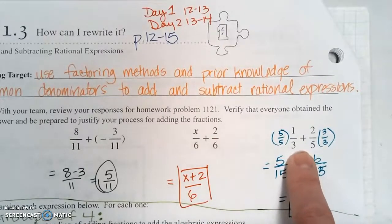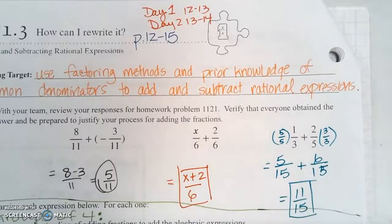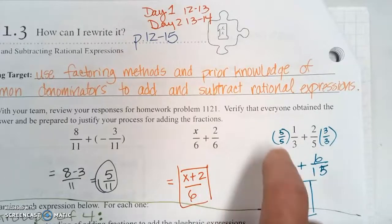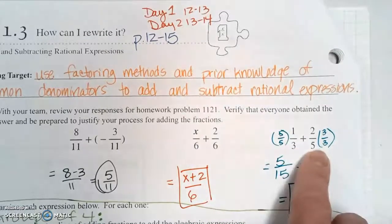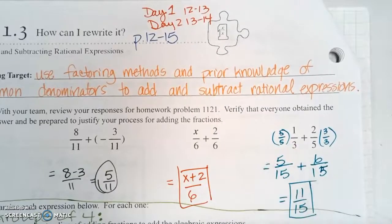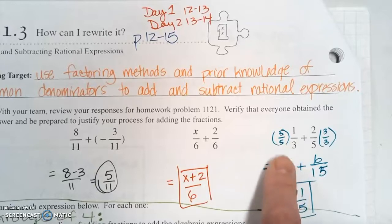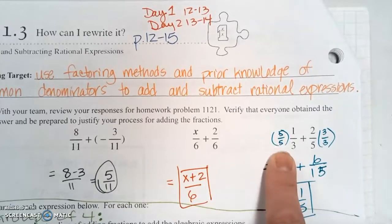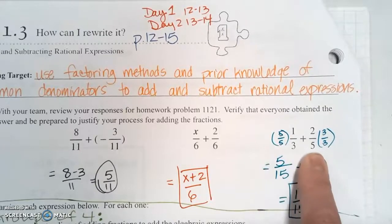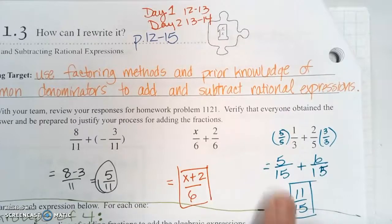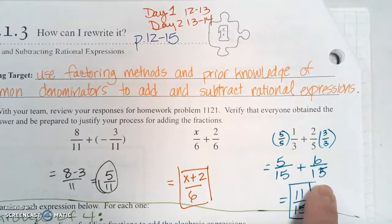This third one does not have common denominators, so we study the denominators for a minute: 3 and 5. So the common denominator would be 15. That means I need to multiply the first expression by 5 over 5 and the second expression by 3 over 3 to get that common denominator of 15.